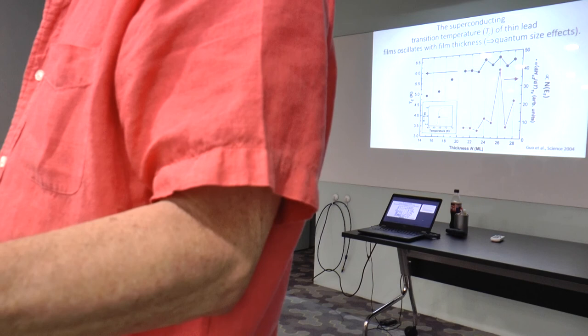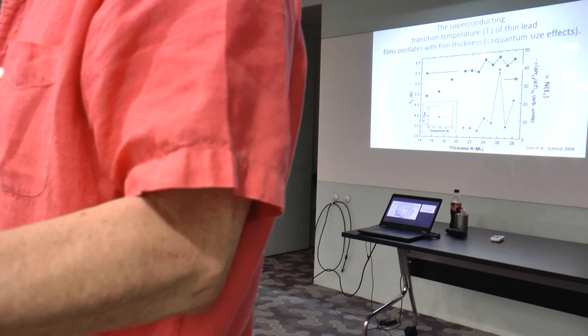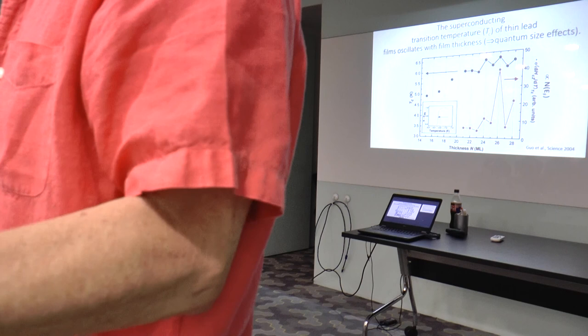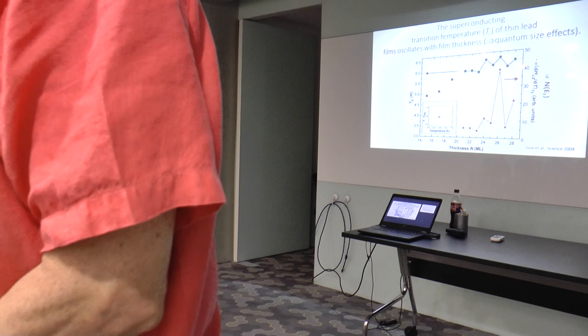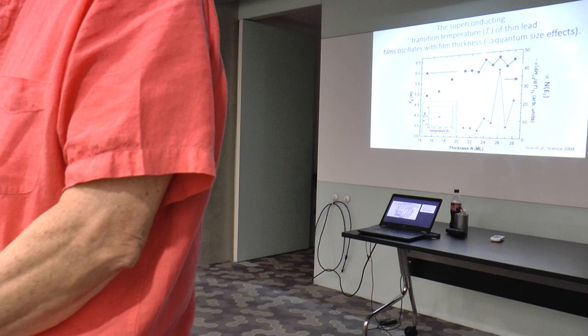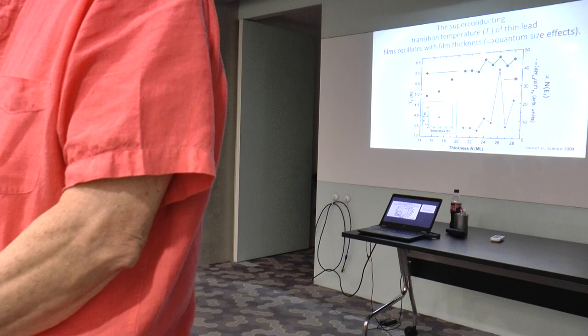Just because you have a Rashba spin-orbit coupling doesn't mean you induce magnetism. If there is magnetism at the interface, it may be associated with spin-orbit coupling but is not a direct result of it. We don't fully understand the interaction yet — maybe we could make a diagram on the blackboard. Next time: interfacial superconductivity continued.